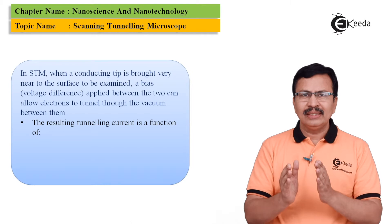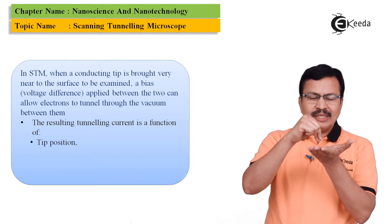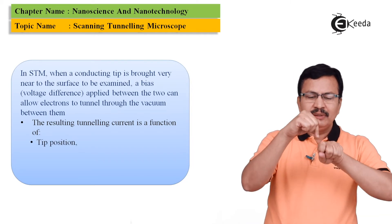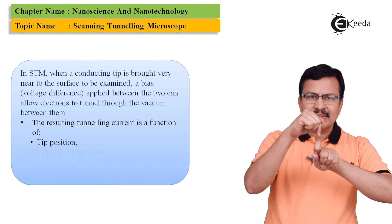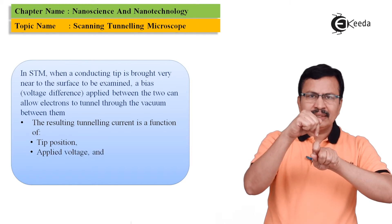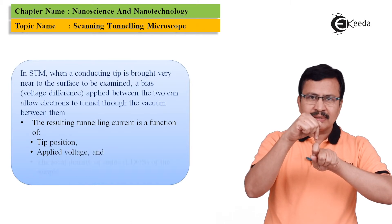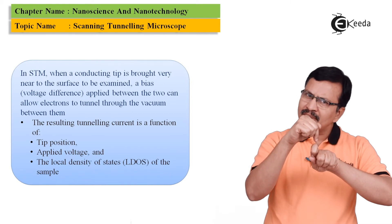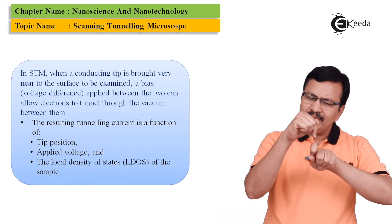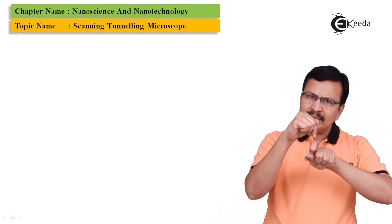If you want to maintain the same tunneling current what shall happen? So for example let us say there is a bulge at this place right suddenly the tunneling current is going to increase. I do not want such kind of increases over there rather what I will do is I will make the tip up so that the tunneling current will remain the same.